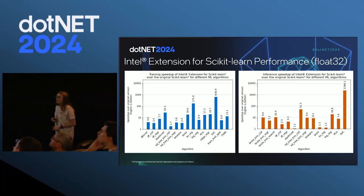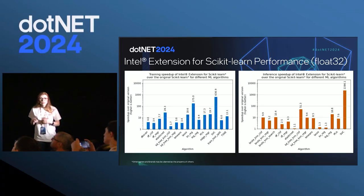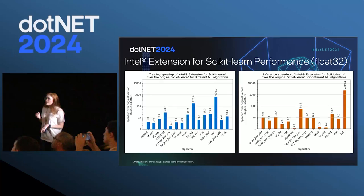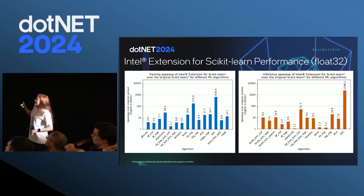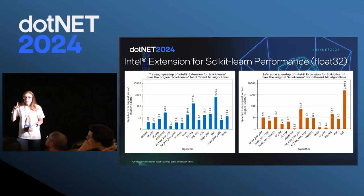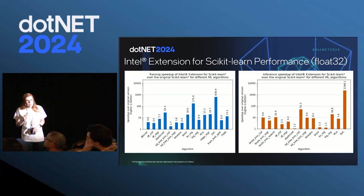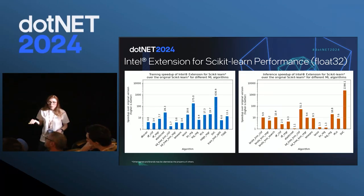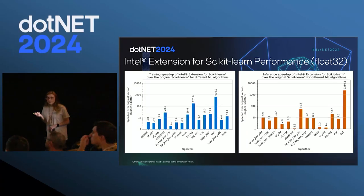Of course, the improvement will depend on what you're using it for — depending on the algorithm, you'll get a different performance improvement. These are some of the algorithms that are optimized right now, and in every release we're working on adding more. You can get up to 2000 times improvement. On the left side you have training, on the right side inference. You get this improvement by adding two lines of code, because the scikit-learn extension uses OneDAL, which is part of OneAPI.